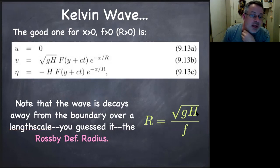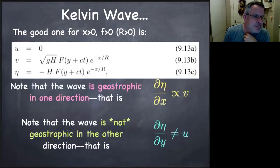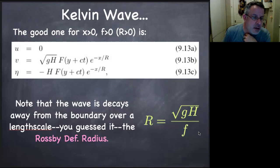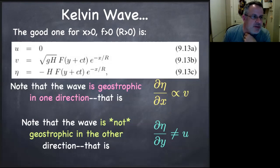The Rossby deformation radius is the square root of gh over f — a length scale built out of the parameters of this kind of problem. In the ocean, for the external one, this is about 10,000 kilometers. For the internal one — based on motion above the pycnocline — this is around 50 kilometers. For barotropic Kelvin waves, we expect them to fill the whole basin; for baroclinic Kelvin waves, we expect them to be detected just along the coastlines. The flow is geostrophic in one direction: dη/dx equals fv, but not geostrophic in the other direction — it's like a gravity wave in y. So it's a funny blended geostrophic-gravity wave balance.